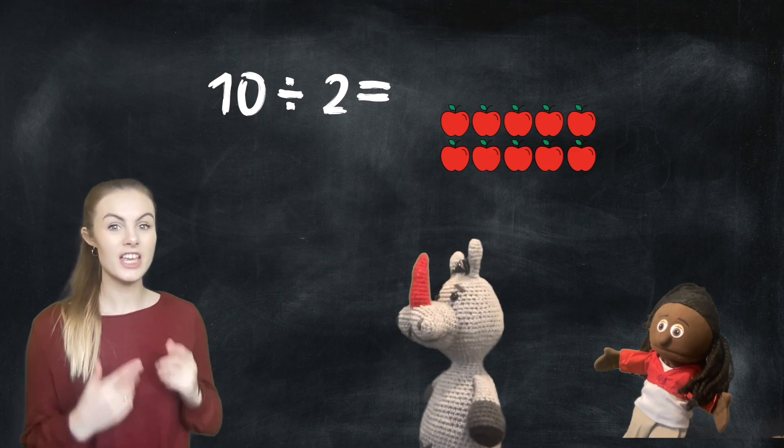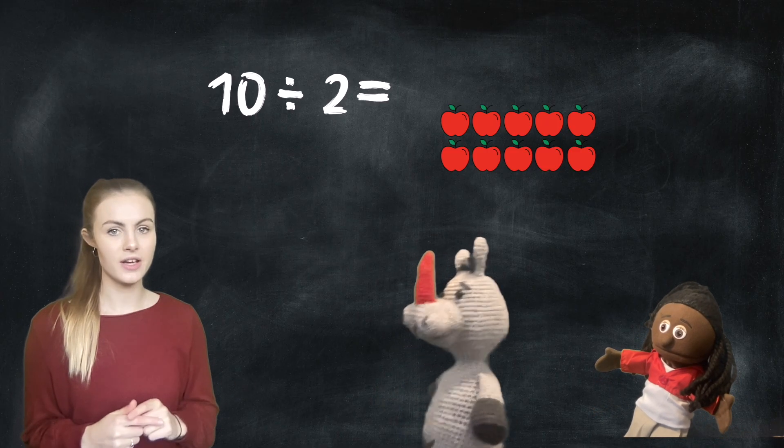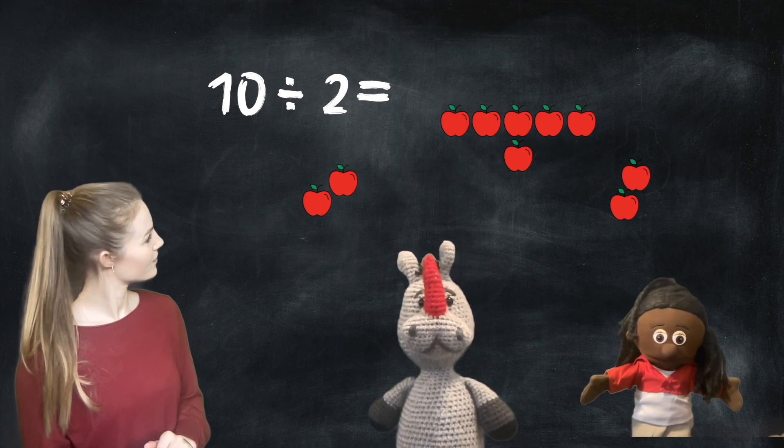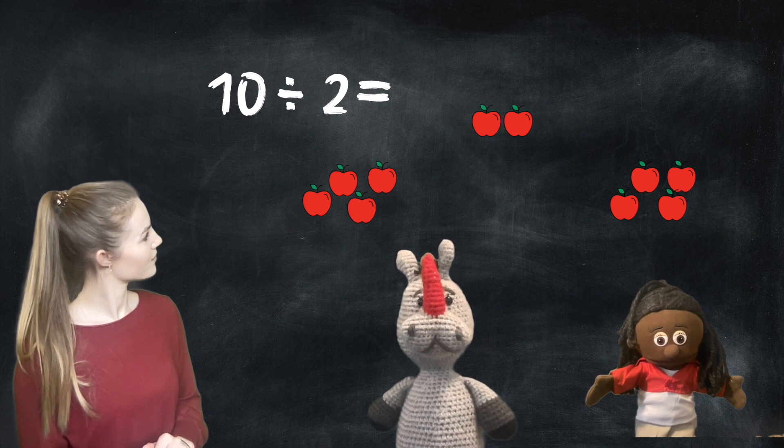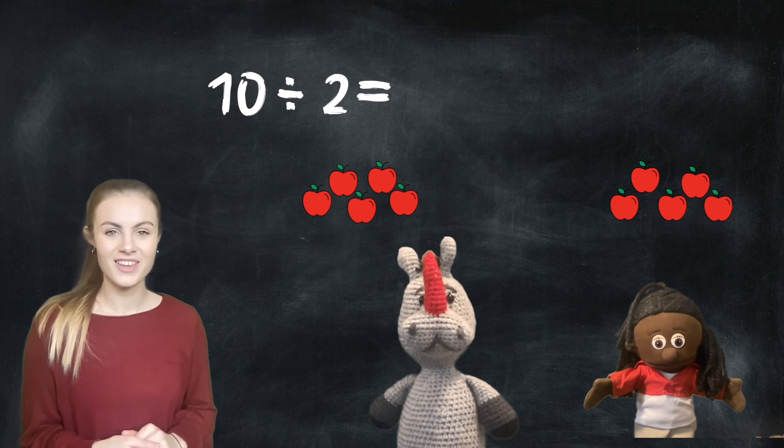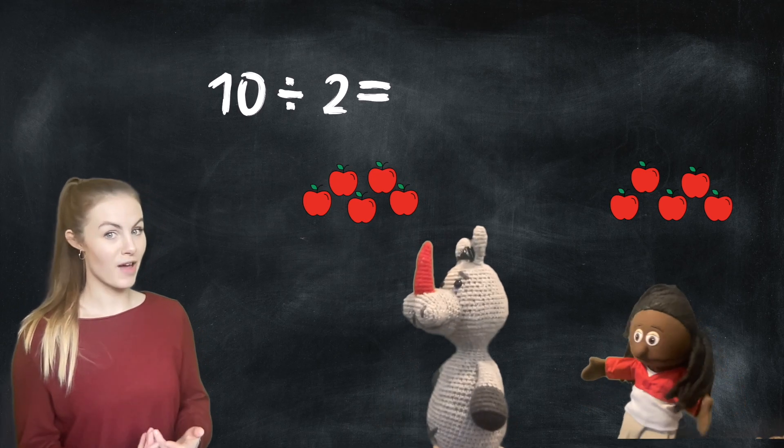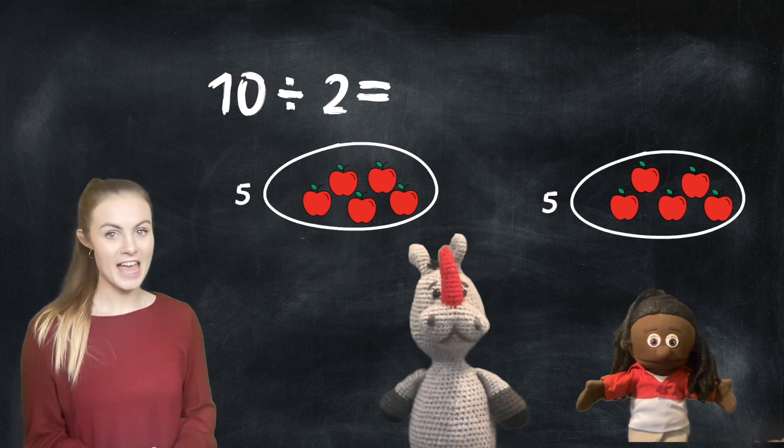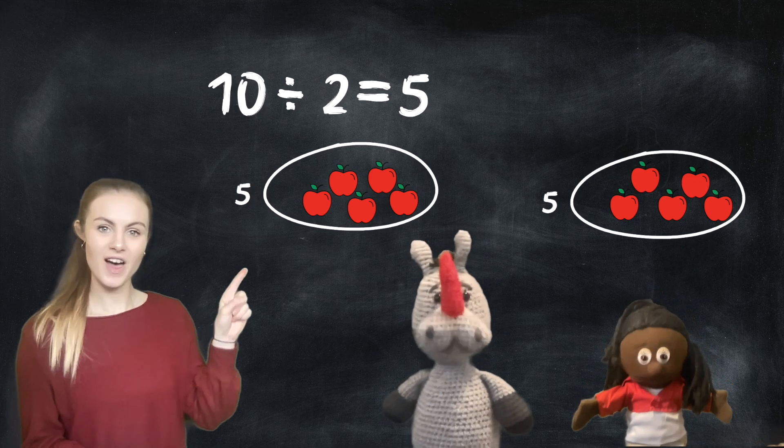Let's slow right down and give each person one apple at a time until we run out of apples. Fab! Now they've both got the same amount of apples. They've both got five apples. That means that 10 divided by 2 equals 5.